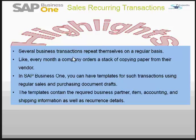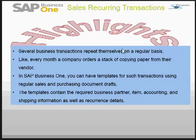The template contains the required business partner from which you are getting the items or for which you are paying, along with the items, accounting, shipping information, and other details as well. You can define the recurring details — when the documents should be auto-generated — and there are other things we will learn in the videos.